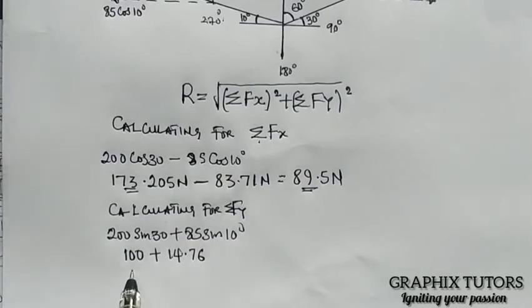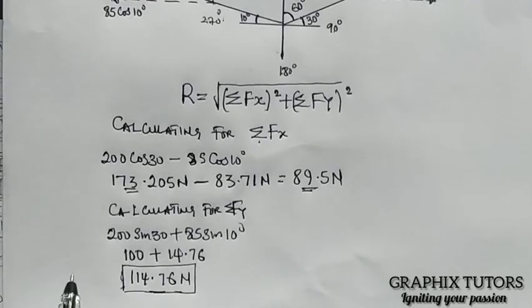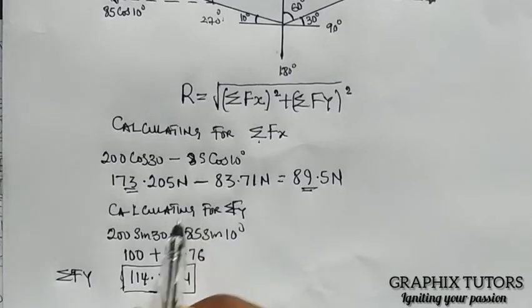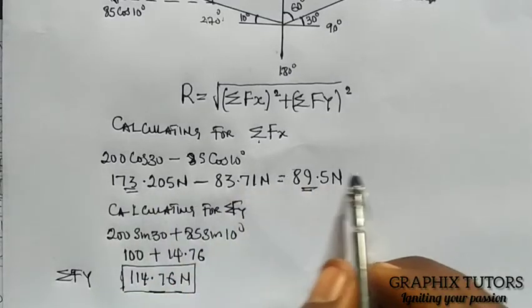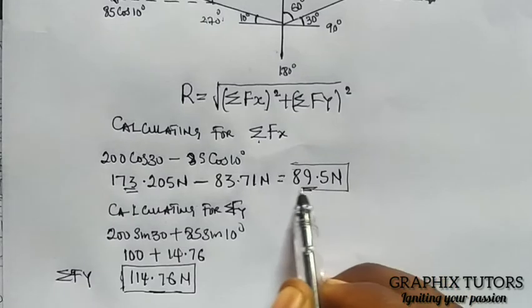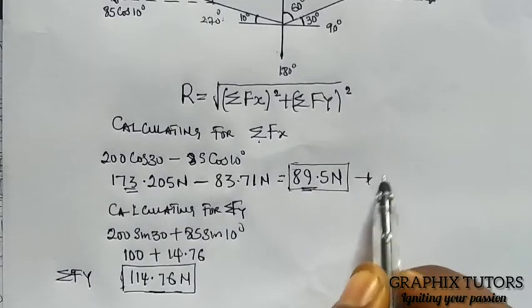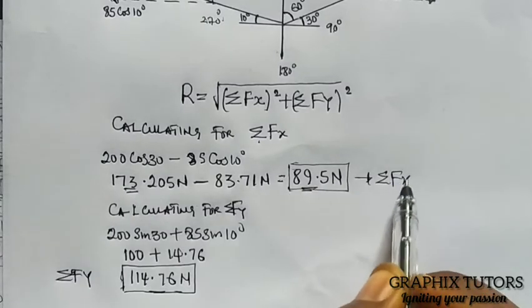So we are going to get 114.76 Newton. So that is the force along, this force you see here is the summation of F of y. And this force you see here is the summation of F of x.